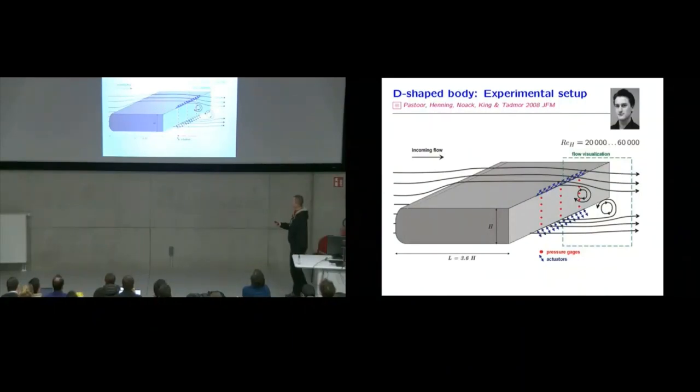Well, here we have an experiment. D-shaped body flows from left to right. The goal is to reduce the drag. You have a couple of 15 pressure gauges. You can blow and suck on both actuators independently. Reynolds number is around 40,000. So it's reasonably turbulent. And I'm reporting now about a PhD thesis, which has been done some time ago by Marc Pastor.